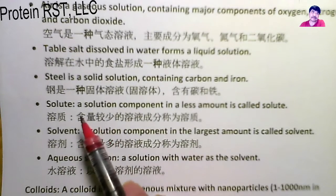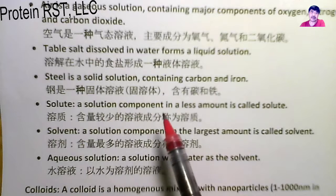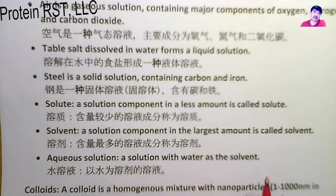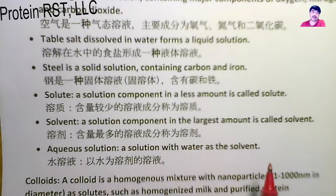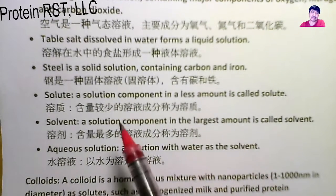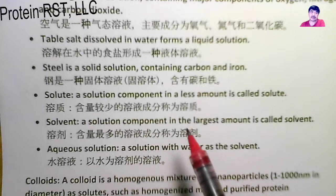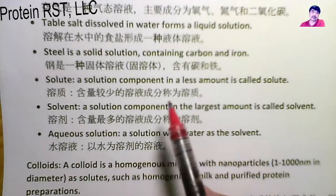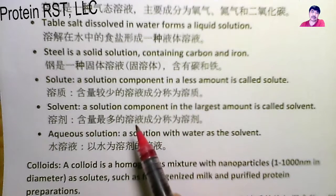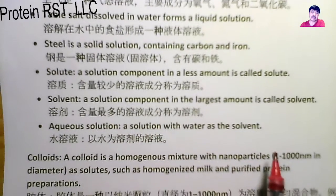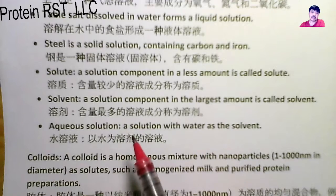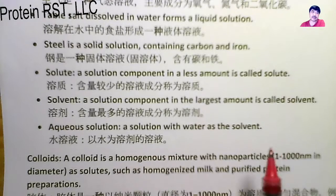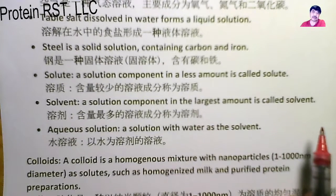Solute — a solution component present in a lesser amount is called a solute. 溶质，含量较少的溶液成分称为溶质。 Solvent — a solution component present in the largest amount is called a solvent. 溶剂，含量最多的溶液成分称为溶剂。 Aqueous solution — a solution with water as a solvent. 水溶液，以水为溶剂的溶液。